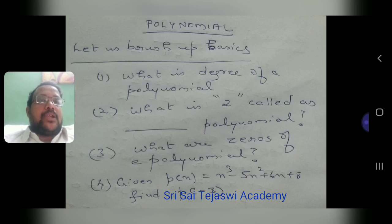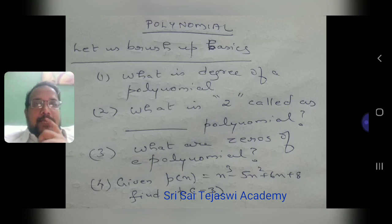Second question: what is 2 called? I mean, what kind of polynomial is it? 2 is called a constant polynomial or zero polynomial — that is the answer.